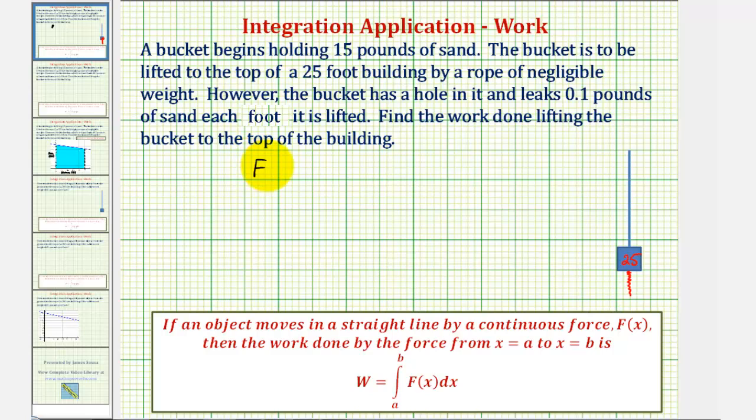The force, f of x, will be equal to the initial weight of 15 pounds then minus the loss of 0.1 pounds per meter, which would be 0.1 times x, where x is the distance in meters.